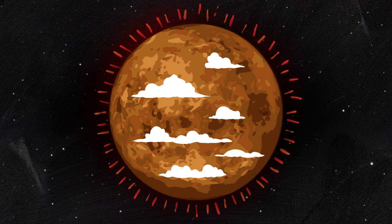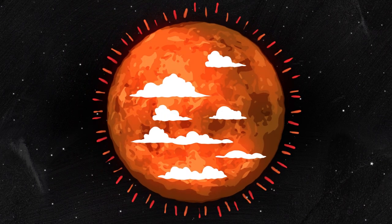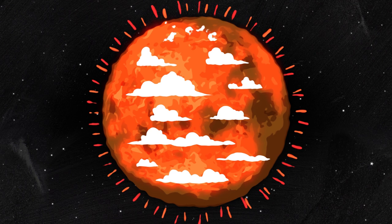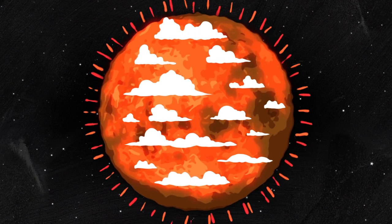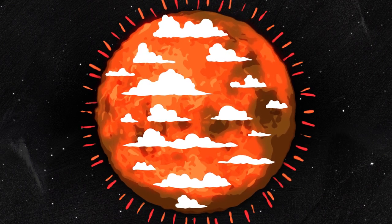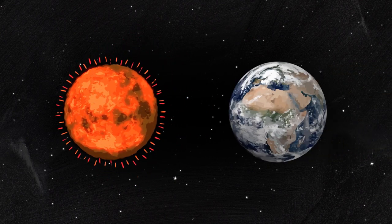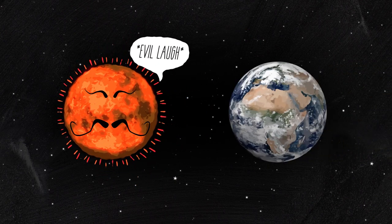Understanding how Venus's atmosphere turned into a runaway greenhouse, boiling away any oceans and baking the surface, could help astronomers studying other solar systems. They could distinguish truly Earth-like exoplanets from evil twins like Venus.